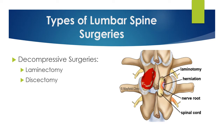Removal of the lamina allows the surgeon to perform a discectomy, which is cutting or removing part of the disc that is herniated. Here we can see the opening where the lamina was removed, allowing the surgeon to visualize the disc herniation and perform the discectomy.